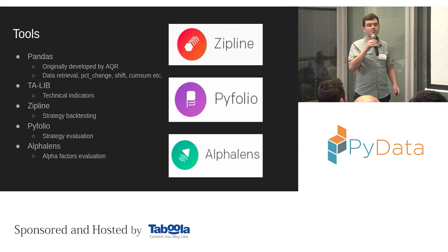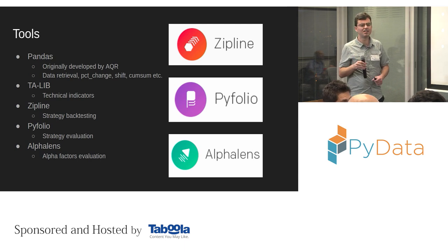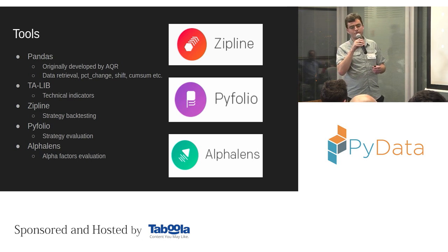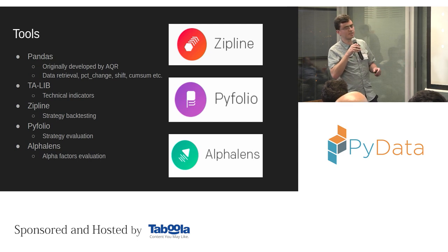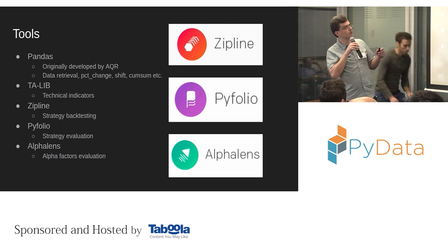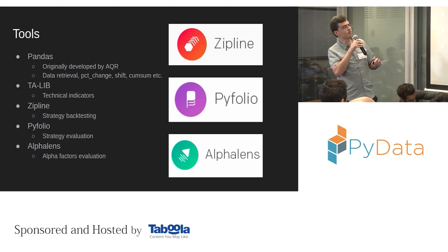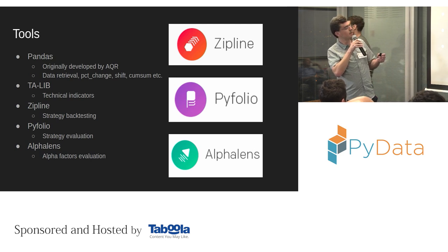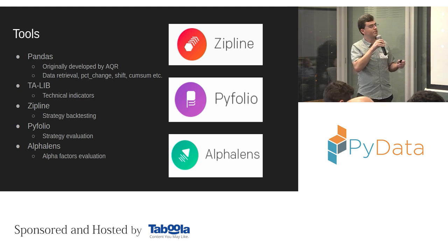You can aggregate, and all of the indicators are based on some period, so you can basically create an infinite number of features — it's limitless. Please note that Pandas was originally developed by AQR, which is a huge investment management fund. All of the functions like percent change, shift, and cumulative sum are targeting quantitative finance. If you're interested in technical analysis, you have TA-Lib, and a couple of open source projects by Quantopian like Zipline, PyFolio, and AlphaLens, which are already integrated into Quantopian.